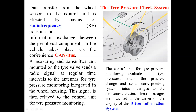A measuring and transmitter unit mounted on the tire wall sends radio signals at regular intervals to the antenna. The antenna receives information from the tire pressure sensor and supplies it to the control unit. The signal is then relayed to the tire pressure monitoring control unit, which evaluates the pressure change and sends corresponding status messages to the instrument cluster, displayed on the driver information system or dashboard.